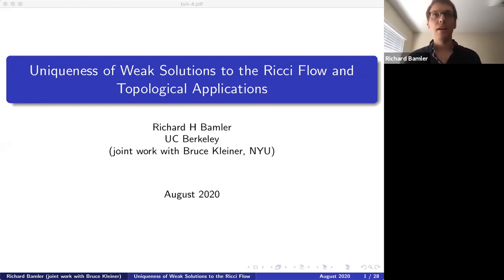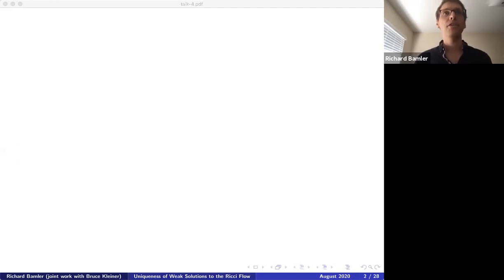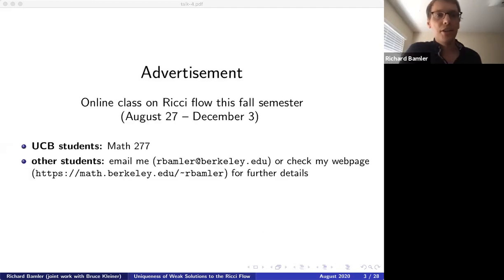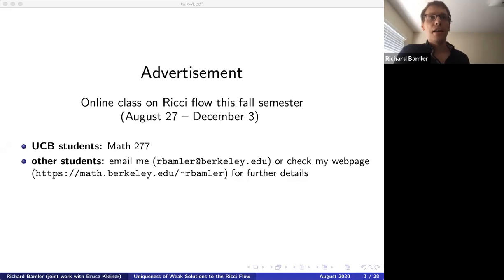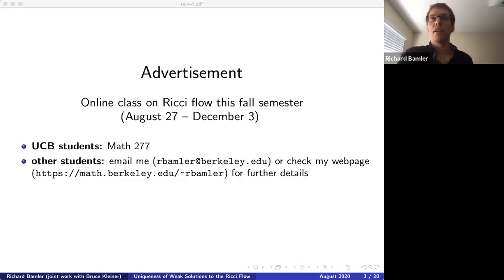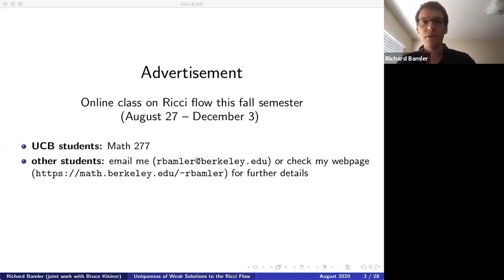I also wanted to make a quick announcement. I'll be teaching an online class on Ricci flow this fall semester. If you're a UCB student and you're interested, this is Math 277. If you're a student from some other university, feel free to email me — I hope I'll be able to share the Zoom link with you so you'll be able to attend.